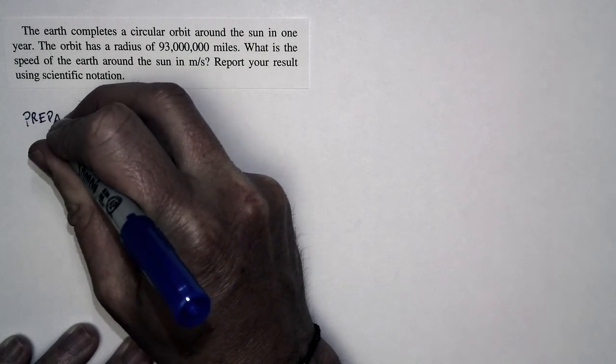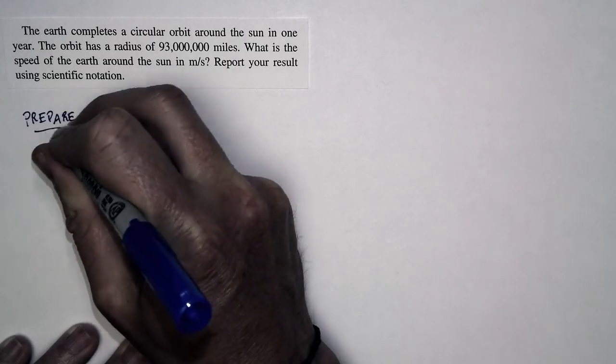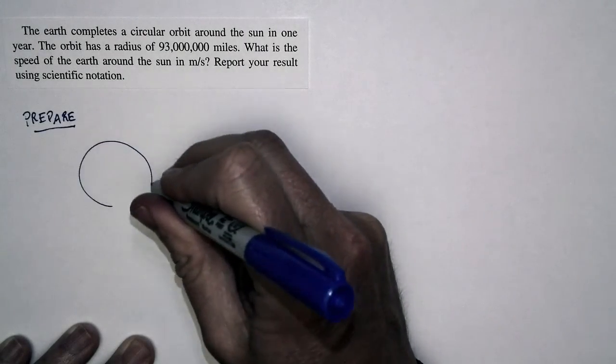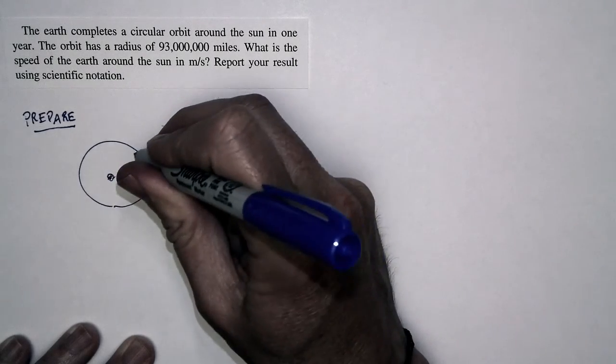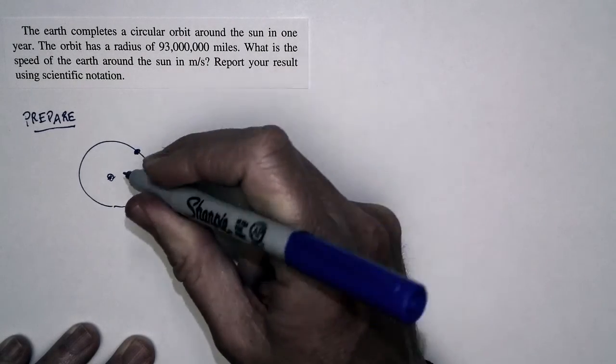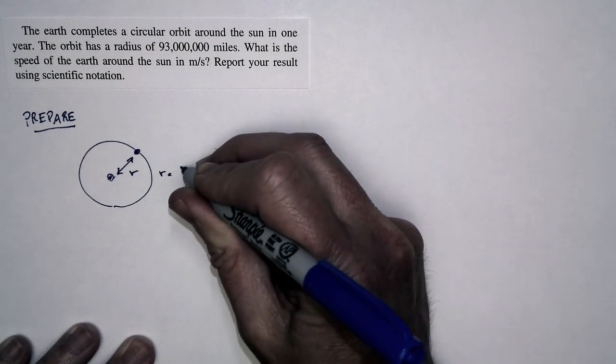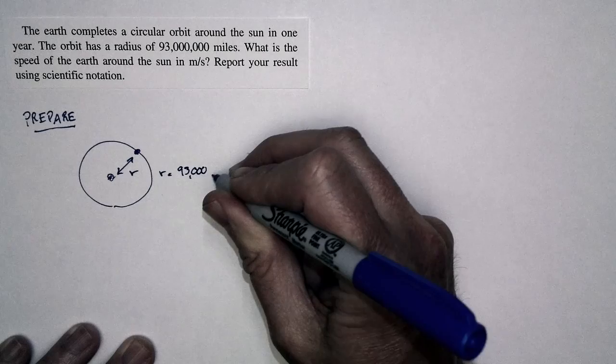The basic data that we're given in this problem is this. The Earth goes in a circular orbit of radius 93 million miles. So here's the Sun, here's the Earth, and it's going in orbit around the Sun, and the radius of the orbit is 93 million miles.